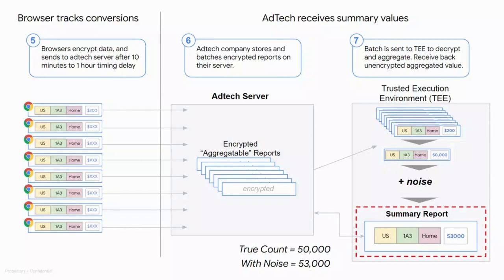Here, the reports in the batch will be decrypted and then aggregated together. In this example, all buckets that are the same will have their purchase value summed together. Within this environment, noise will be added to the aggregated purchase value. Once this is completed, a summary report is sent back to the ad tech. In this example, the ad tech would receive back information that for this bucket, there was an aggregate purchase value of 53,000. The ad tech will not know the true value of 50,000, but rather the aggregate purchase value with noise added.